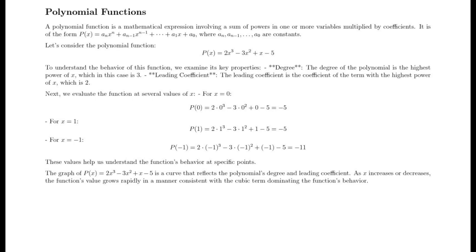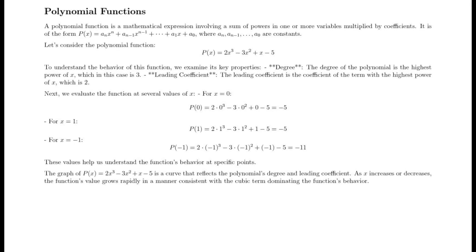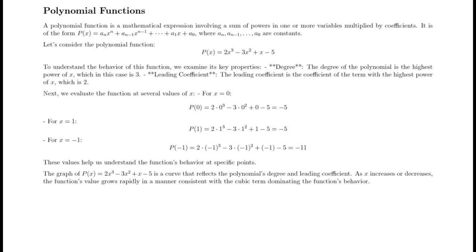The graph of p(x) = 2x³ - 3x² + x - 5 is a curve that reflects the polynomial's degree and leading coefficient. As x increases or decreases, the function's value grows rapidly in a manner consistent with the cubic term dominating the function's behavior.